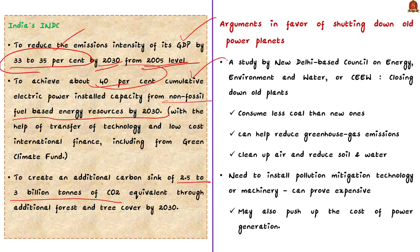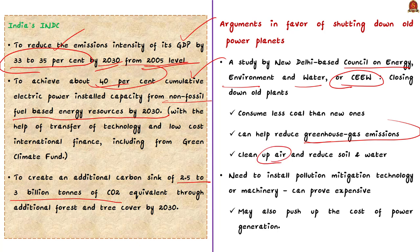Closure of old coal power plants will also reduce soil and water pollution. A study by CEEW — Council on Energy, Environment and Water, based in New Delhi — concluded that closing old coal plants will help reduce greenhouse gas emission, air pollution, soil pollution, and water pollution. You can use this point as value addition in your mains answer.